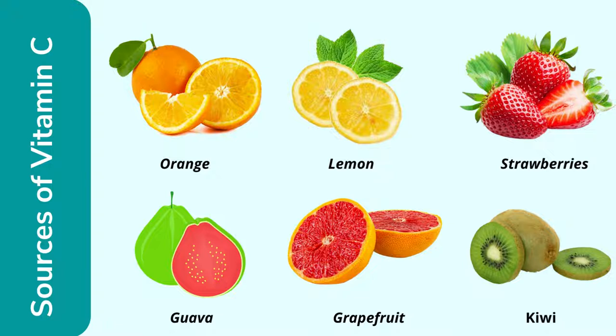Now I'll talk about the various sources of vitamin C. The sources are: orange, lemon, strawberries, guava, grapefruit, and kiwi. All the citrus fruits contain vitamin C. You will never have any deficiency in vitamin C if you take in all of these citrus fruits, because they are very essential for your skin, bones, tissues, and immune system.